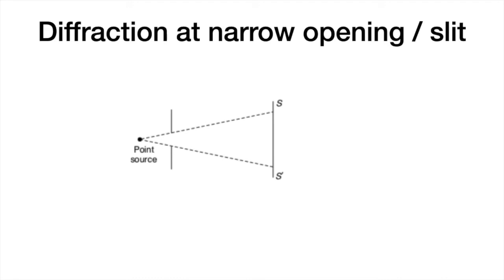When this opening or slit is very very big, we get the geometric shadow on the screen which is shown here as SS prime. But as we start to reduce the width of the slit, and when the width of the slit becomes comparable to wavelength of light, instead of getting a sharp illuminated portion and striking contrast between the illuminated and the shadow region, what we get is a diffraction pattern.